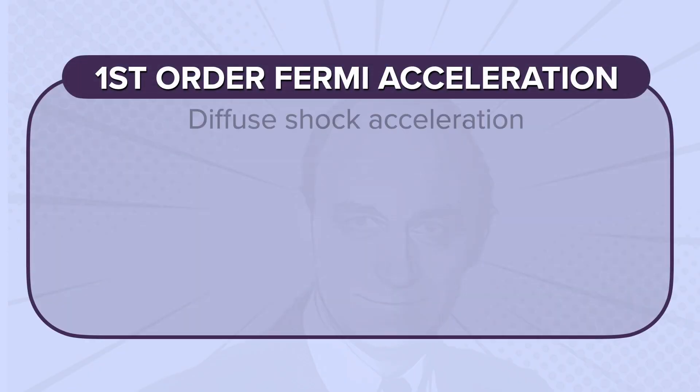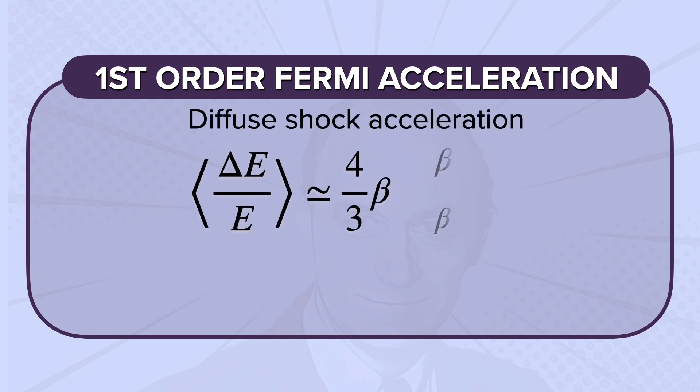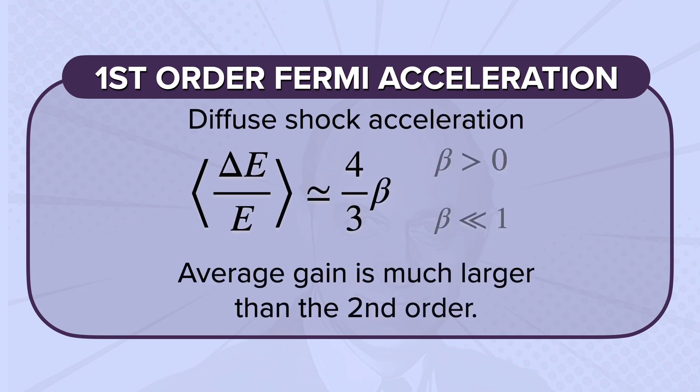Considering the diffuse shock acceleration, we can define the first order of Fermi acceleration. This time, the fractional energy change is proportional to beta, so the average gain is much larger than the second order.